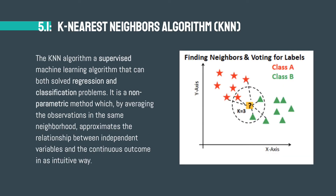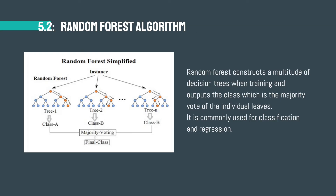This graph shows how KNN works. The KNN algorithm assumes similar things are near to each other, so the unknown data point will be recognized as the majority of the surrounding known labels. The Random Forest algorithm is based on the Bagging method and gives more randomness than the original approach. It is commonly used for classification and regression.